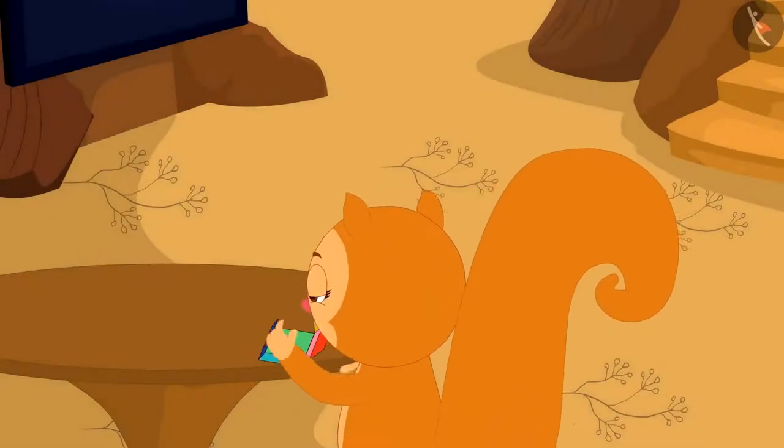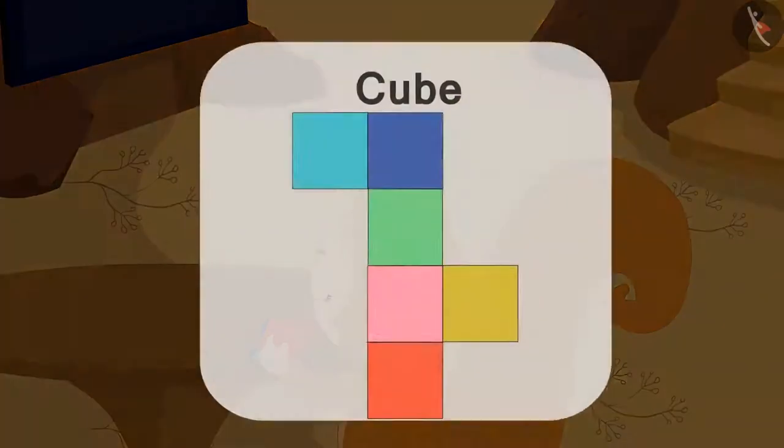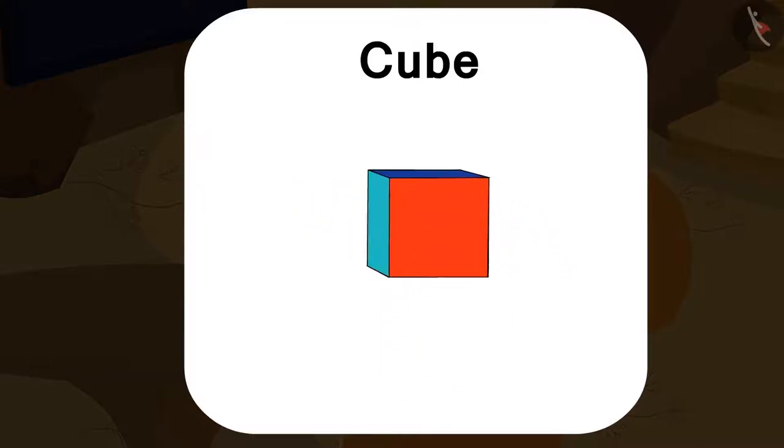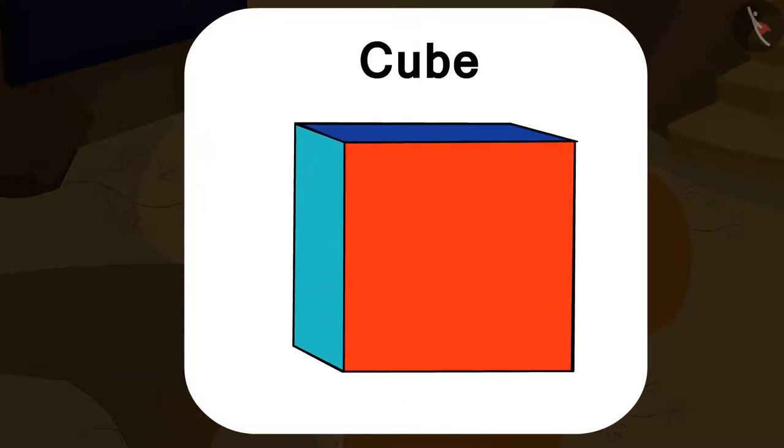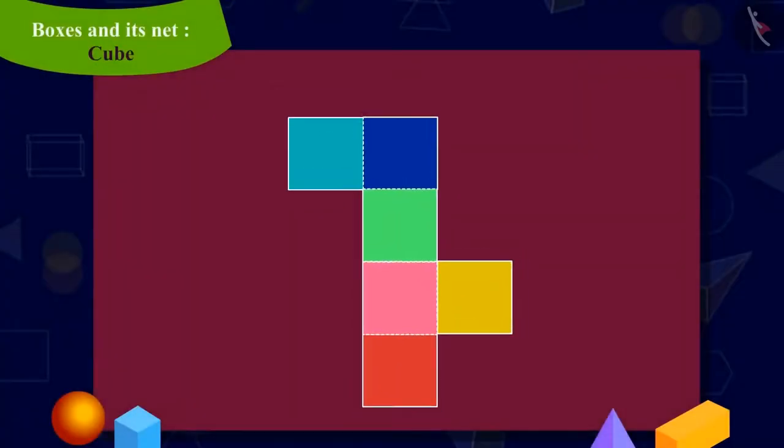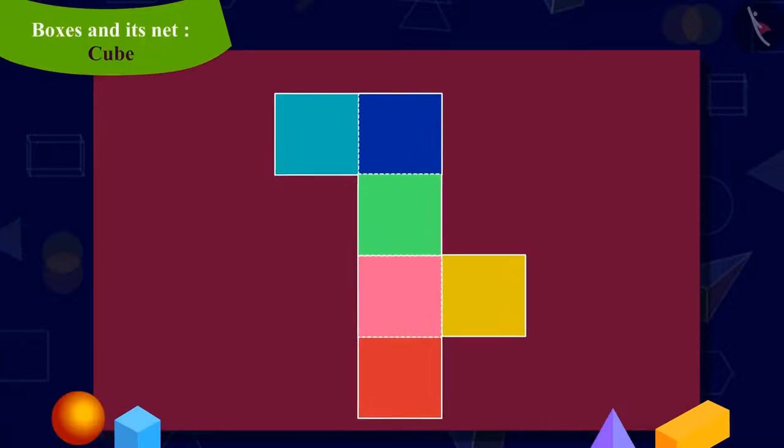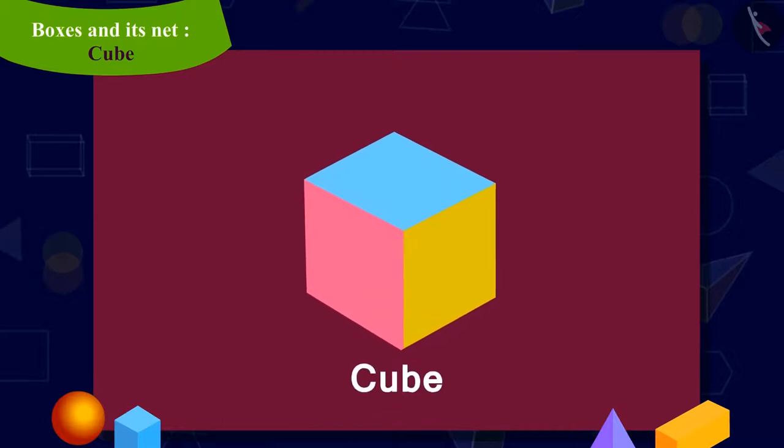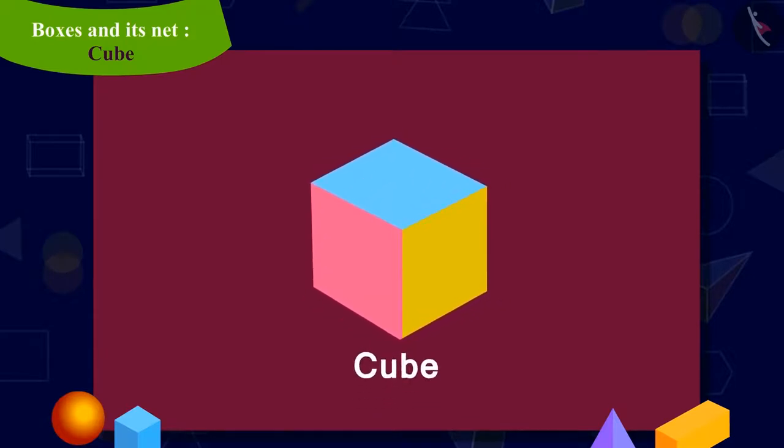Let's see if your answer is correct or not. Chanda cut out the shape and began to fold it this way. Well done kids, your answer is absolutely correct. This shape is the net of a cube. And see that a box for Chanda is ready.